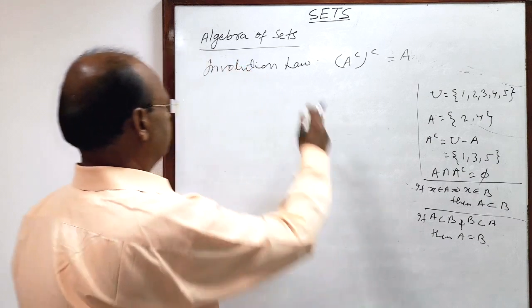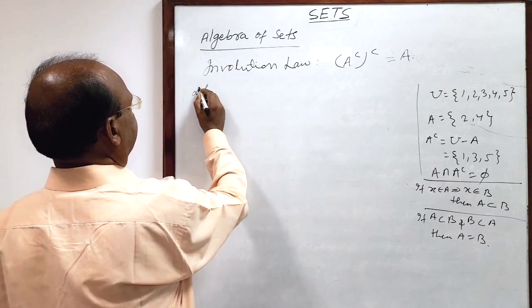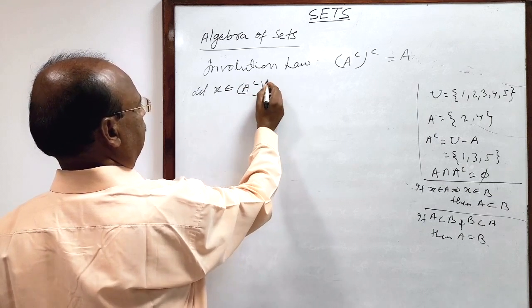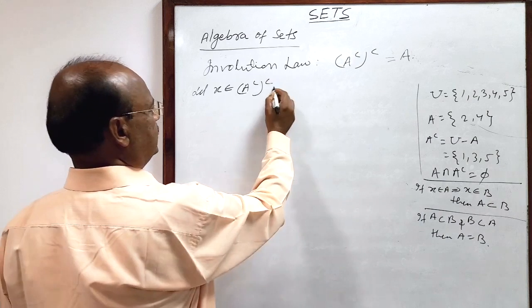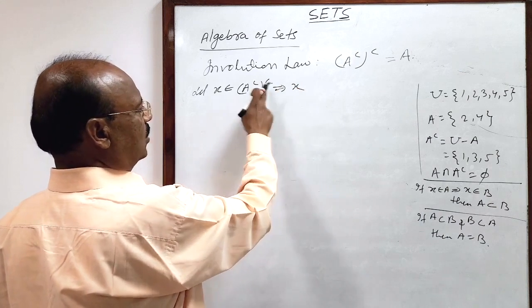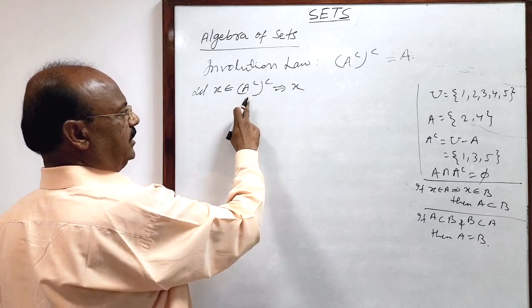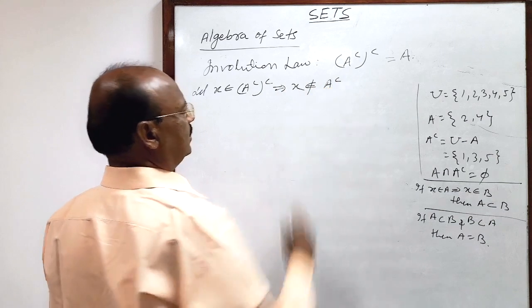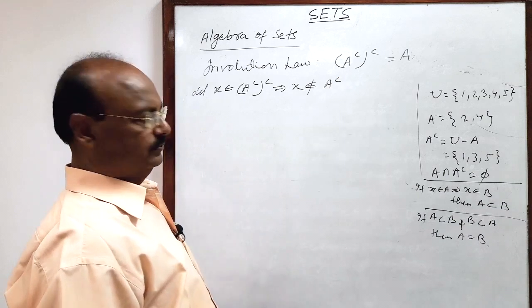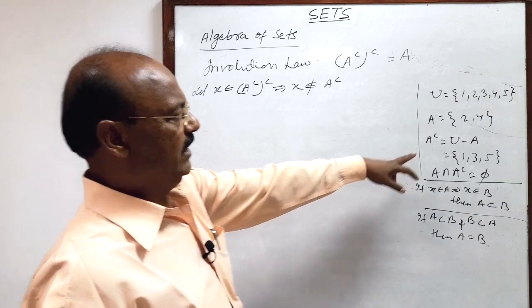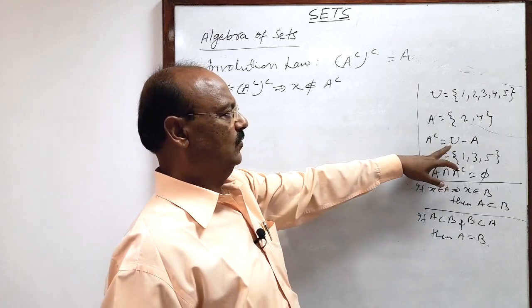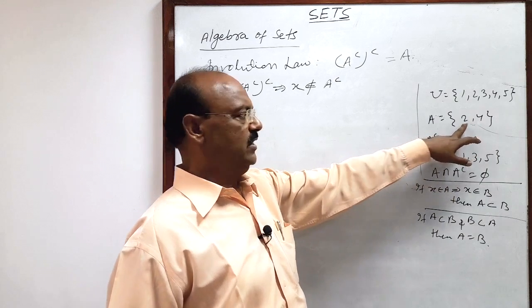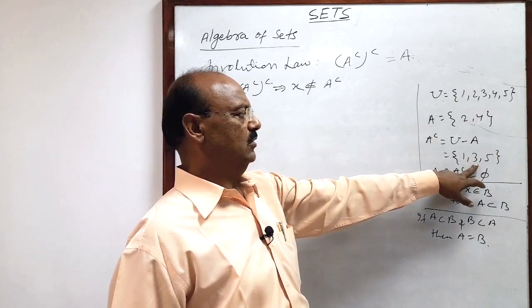Let x be any arbitrary element of the left-hand side. This implies that x belonging to the complement of this set means x will not belong to A complement itself. If an element belongs to any set, it will not belong to its complement — 2 and 4 belong to set A, so 2 and 4 do not belong to A complement.